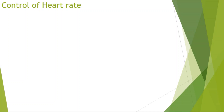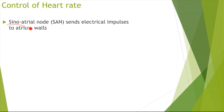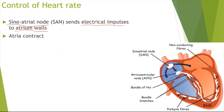So now looking at the control of the heart rate itself. What happens first is that the sinoatrial node, the SAN, sends electrical impulses to the atrium walls. What this causes is the atria to contract — the atrium walls contract and the volume decreases inside the atria.